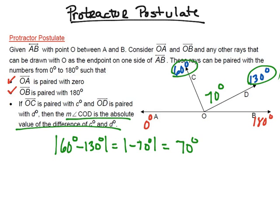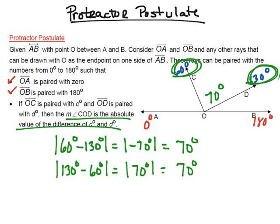I could have done it the other way around: instead of 60 minus 130, I could have done 130 degrees minus 60 degrees. Notice when I subtract 130 minus 60, I still get 70 degrees, and the absolute value of 70 degrees is still 70 degrees. So again, this is the protractor postulate, and it helps us find the measure of angle COD by taking these two degrees and subtracting them.